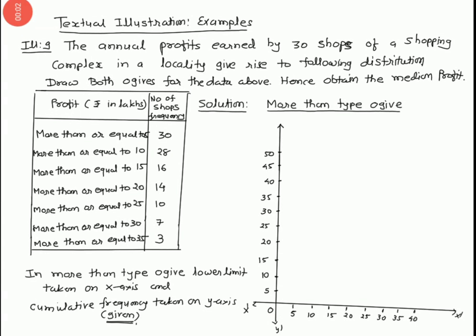Now we start the method to find the median by graphical method. Here in the exercise only three examples are given, therefore we solve the textual illustration. Now we start illustration number nine: The annual profit earned by 30 shops in a locality gives the following distribution. Draw the ogives for the data and hence obtain the median profit.